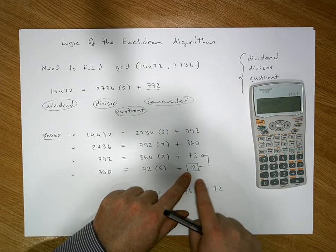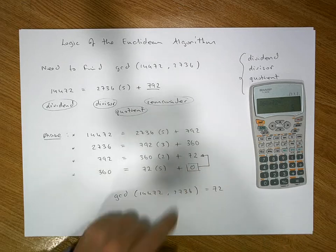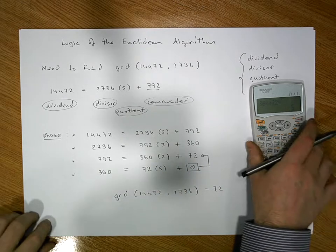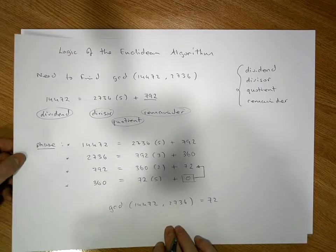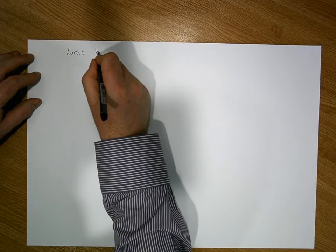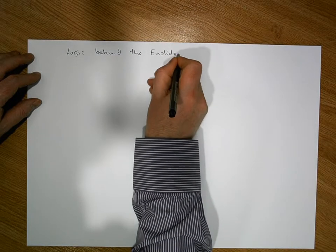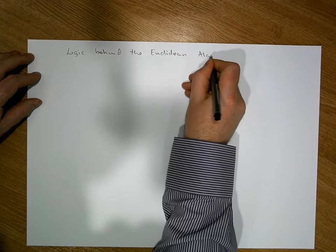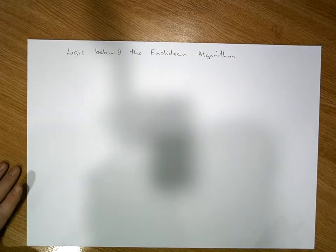So the last non-zero remainder must have been the greatest common divisor between the two numbers. We'll do this out in a little bit more rigor to generalize. This is the logic behind the Euclidean algorithm.